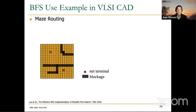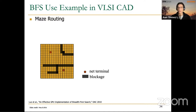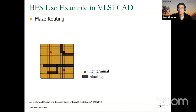BFS is a widely used algorithm in many different applications. For example, in driving assistance tools where you have all the roads of a city or region and want to calculate the shortest path from a source to a destination, you can use BFS or SSSP — single source shortest path — which is a very similar algorithm.